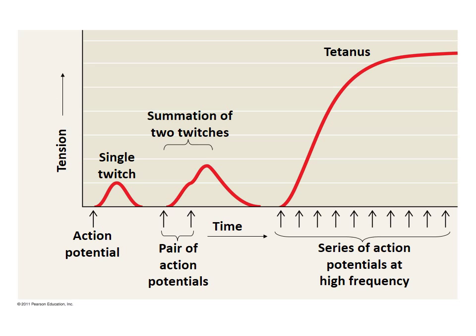More rapidly delivered action potentials produce a graded contraction by summation. Tetanus is a state of smooth, sustained contraction produced when motor neurons deliver a volley of action potentials — the action potentials just keep coming. On a graph with time on the x-axis and muscle tension on the y-axis: one action potential gives a single twitch; a pair gives summation and a bigger twitch; a high-frequency series keeps summing until you reach a plateau — that is tetanus, or sustained contraction.